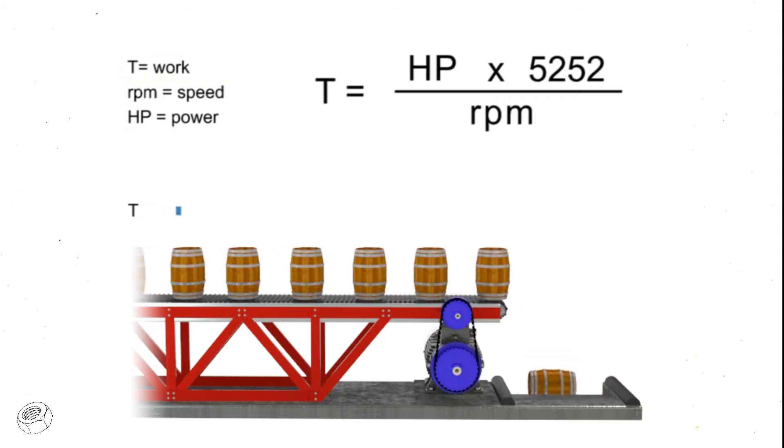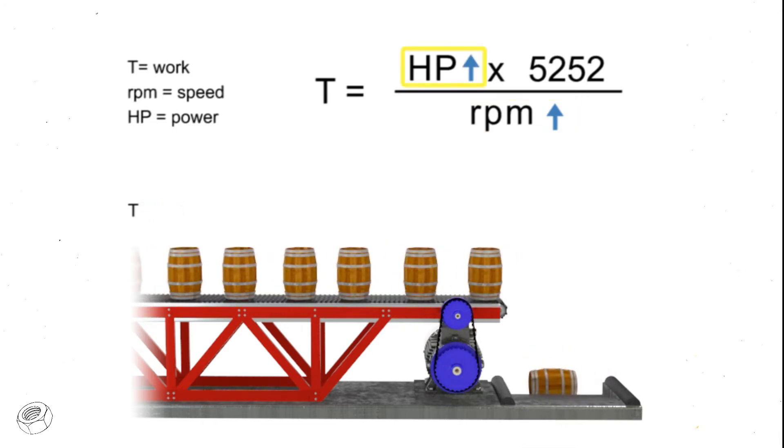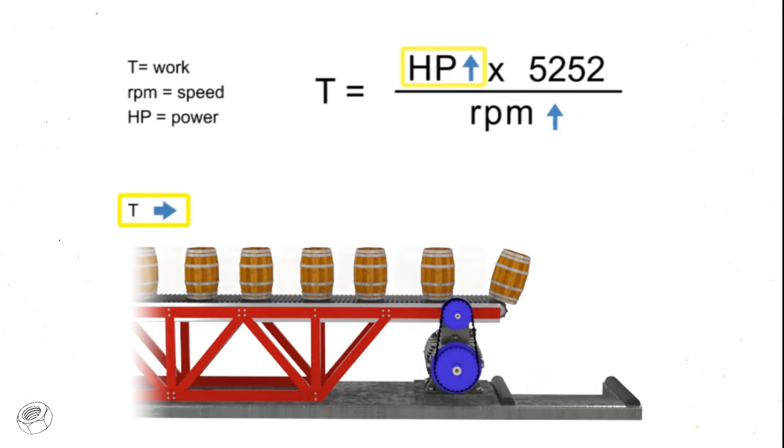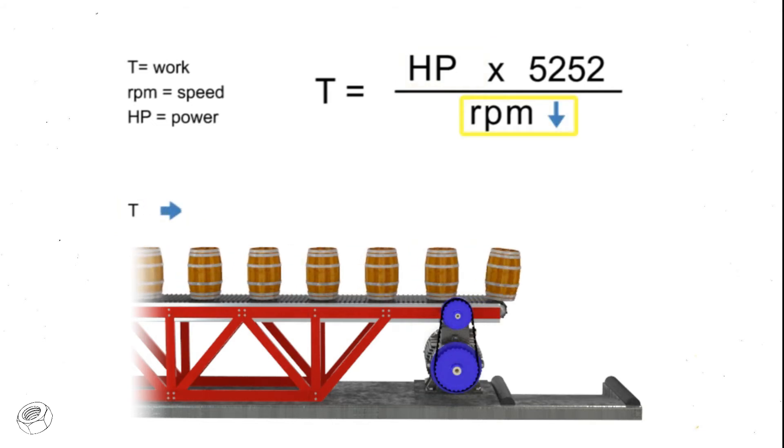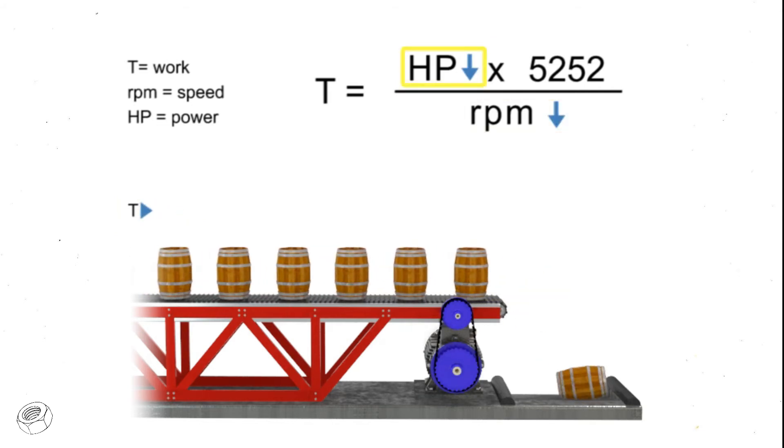As the speed, or RPM, increases, horsepower increases to maintain constant torque. If speed decreases, horsepower decreases to maintain constant torque.